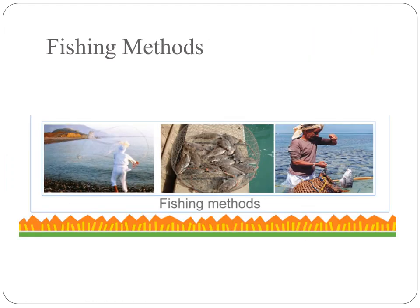These are the fishing methods that people in the past used. In the first image, you see a fisherman who is trying to throw a net in water. In the second image, you will see a lot of fish collected in that net, and then the fisherman is collecting that fish to sell it in the market.